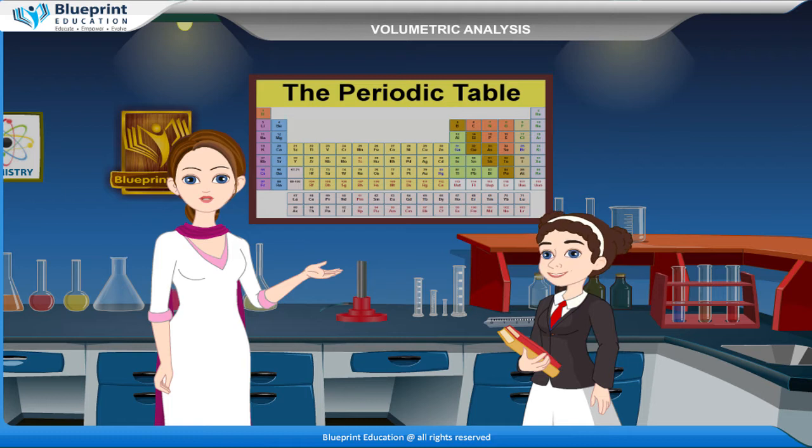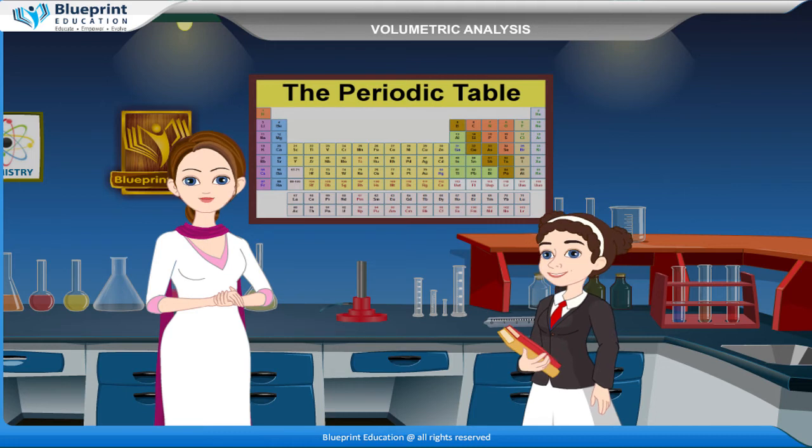Let's do an experiment to prepare 250 ml of M by 30 oxalic acid solution. Using M by 30 oxalic acid solution as a standard solution, find the molarity and strength of the given sodium hydroxide solution.